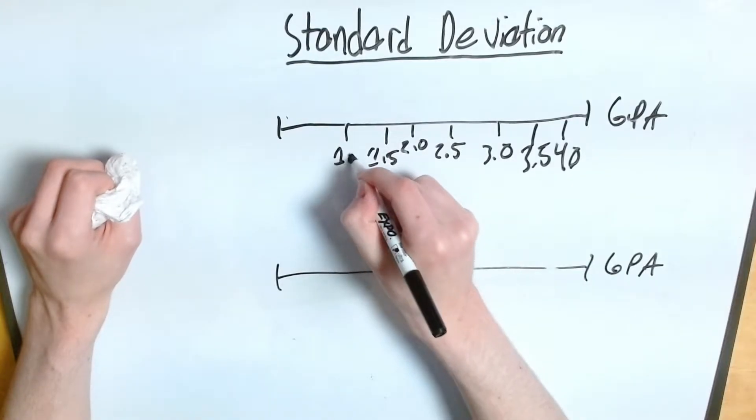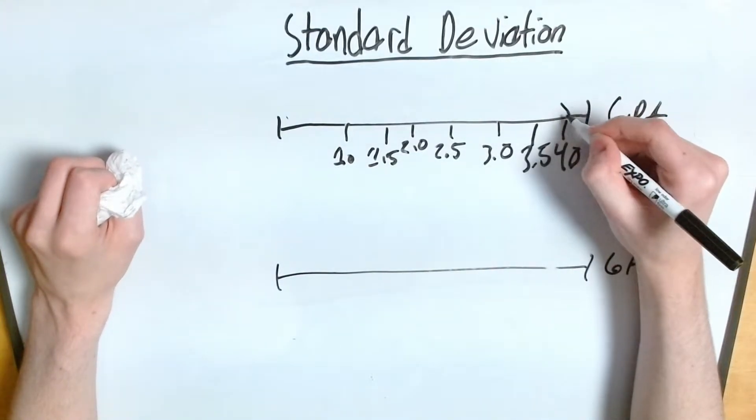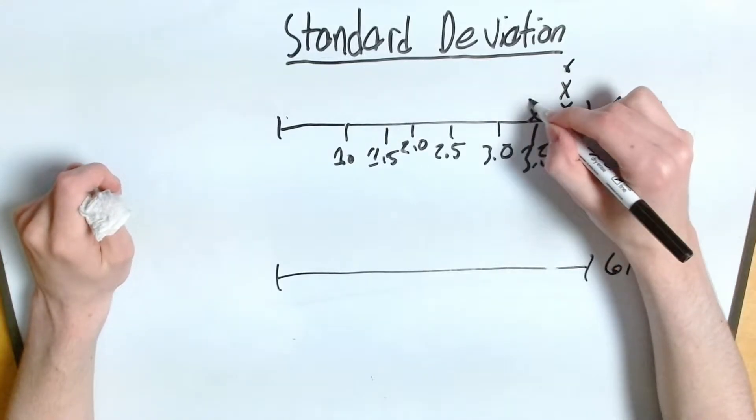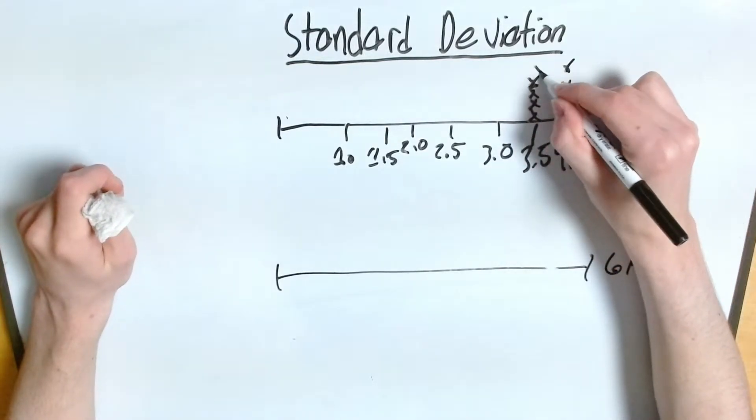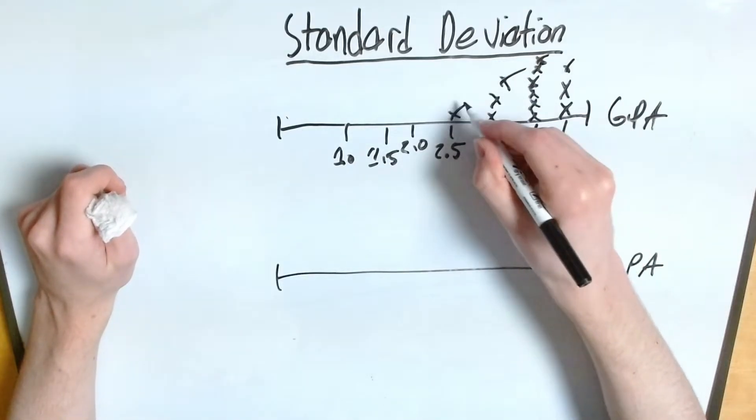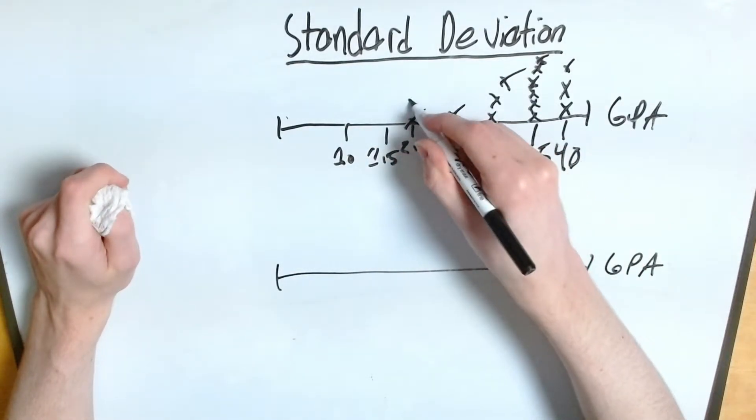And for this I'm going to use x to represent data points. And say so for one school I have something like this. And maybe an occasional one or two here.